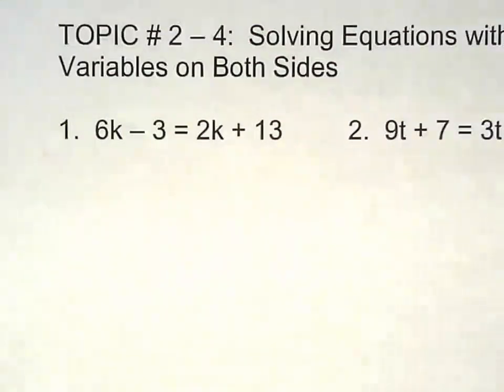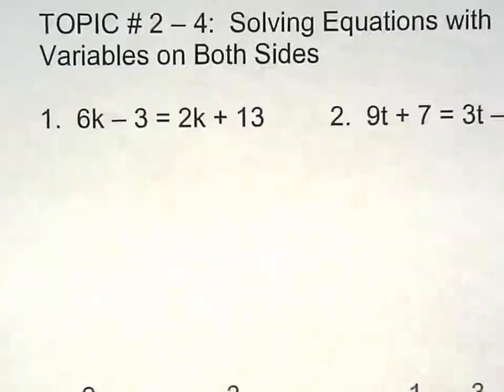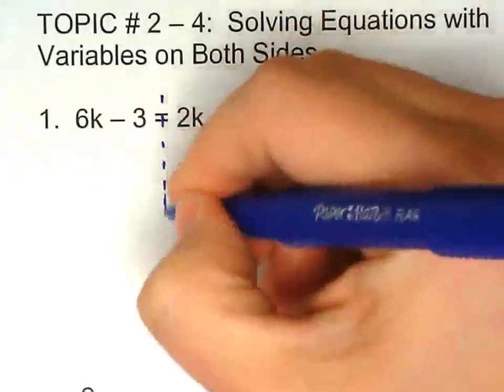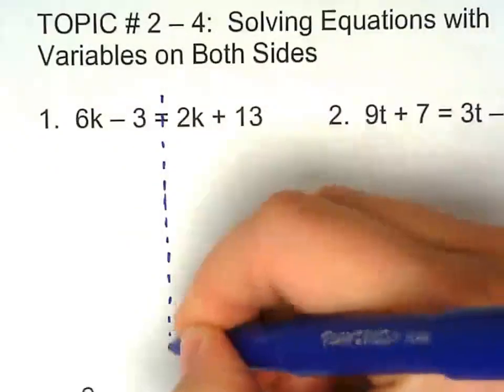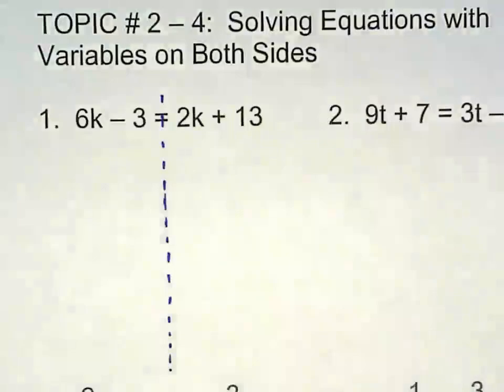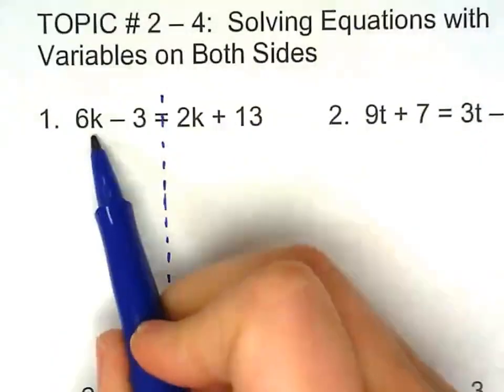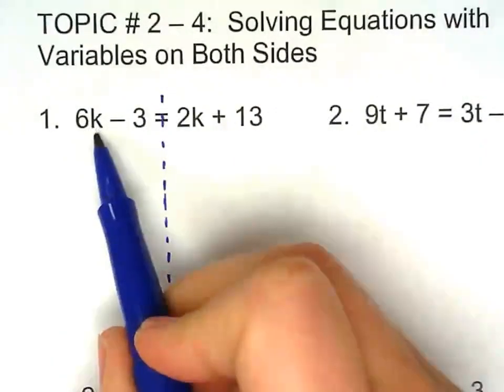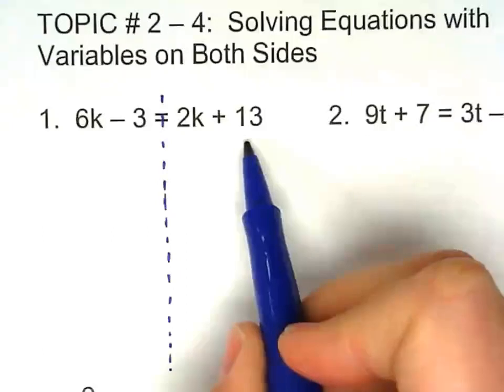This is topic 2-4, solving equations with variables on both sides. Again, we need to keep this organized so we don't get lost. So separate both sides. I like keeping the variable on the left-hand side and the numbers on the right-hand side.